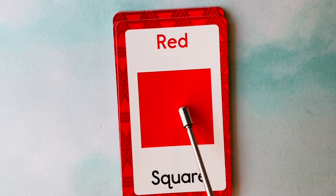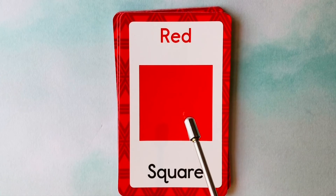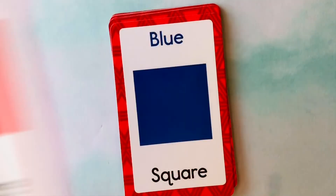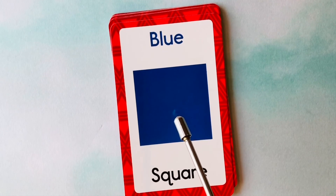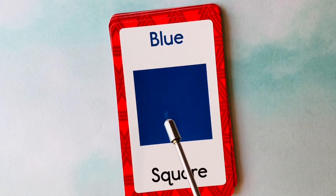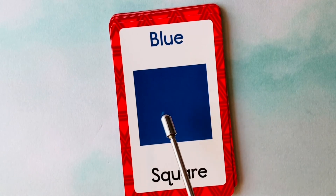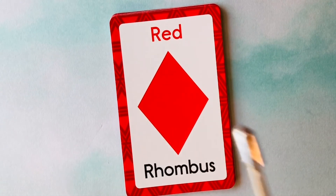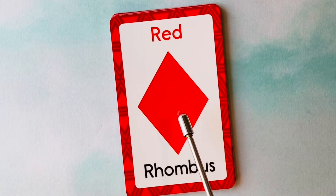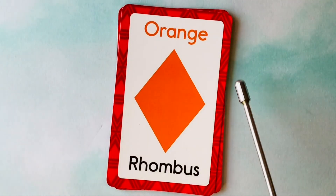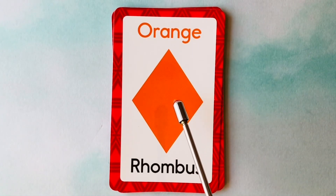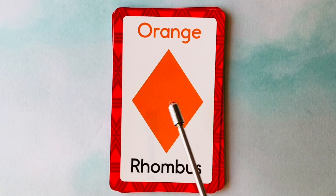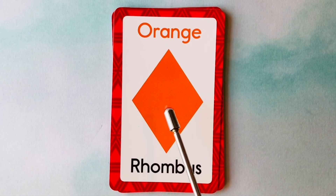This is a square. What color is this square? It's a red square. This is a red square. This is also a square. What color is this square? It's a blue square. This is a blue square. This is a rhombus. What color is this rhombus? It's a red rhombus. This is also a rhombus. What color is this rhombus? It's an orange rhombus. This is an orange rhombus.